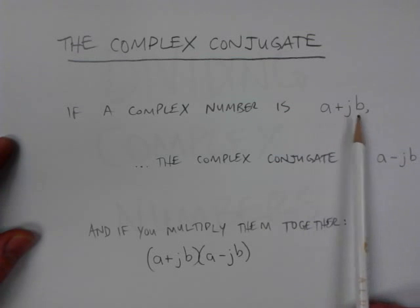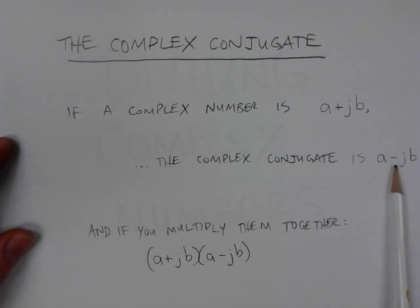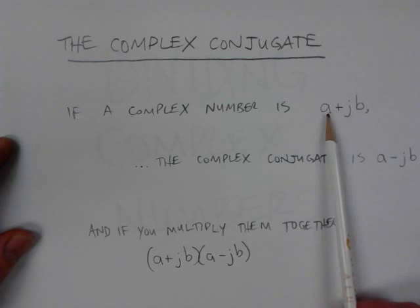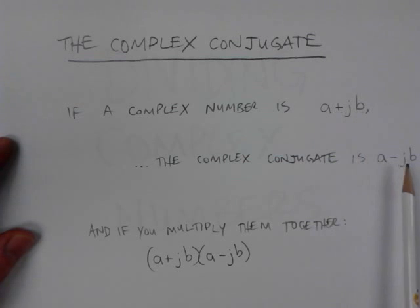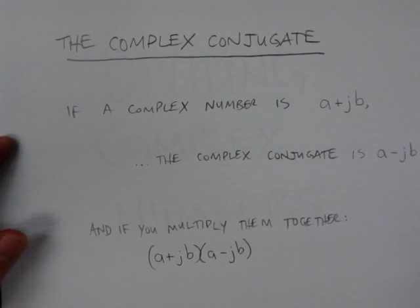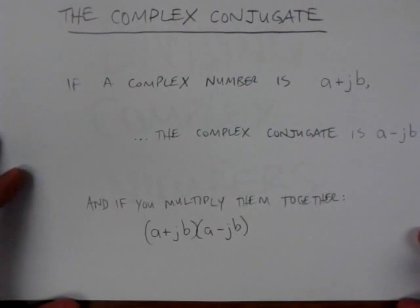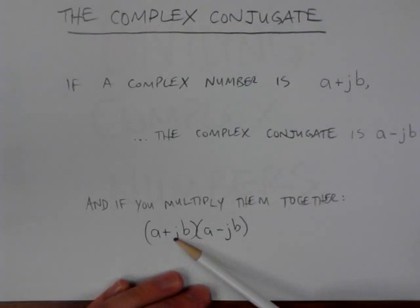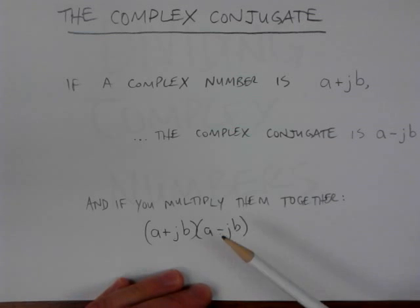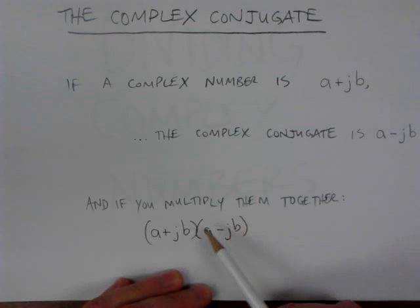So if this is the number a plus jb, the complex conjugate is a minus jb. If the number was a minus, then the complex conjugate would be a plus. The interesting thing about the complex conjugate is if you multiply the complex number by its complex conjugate, all of the j terms end up going away.